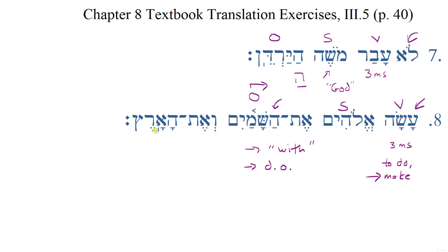Let's note some features of this last word, ha-aretz. The definite article here, instead of the normal he with a patach, has a qamets. That is because the aleph rejects doubling and causes the patach to lengthen to a qamets. So we have ha-aretz. Normally, eretz is written with a pair of segols, but eretz is one of a handful of words that, when we put a definite article on it, the vowel in the first syllable changes — so it becomes aretz instead of eretz. So we have ha-aretz. There are three other main words that do that, and they're mentioned in the textbook.